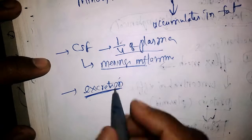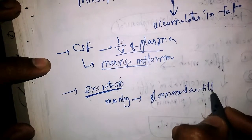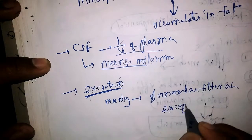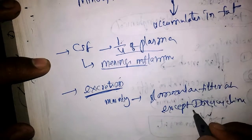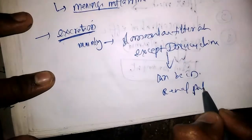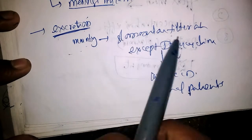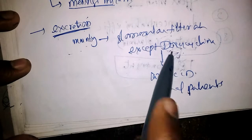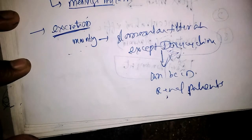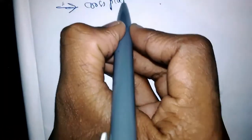Regarding excretion, tetracyclines are mainly excreted through glomerular filtration, except doxycycline. Hence doxycycline can be given to patients with renal disease. Tetracyclines cross the placenta and are secreted in breast milk.